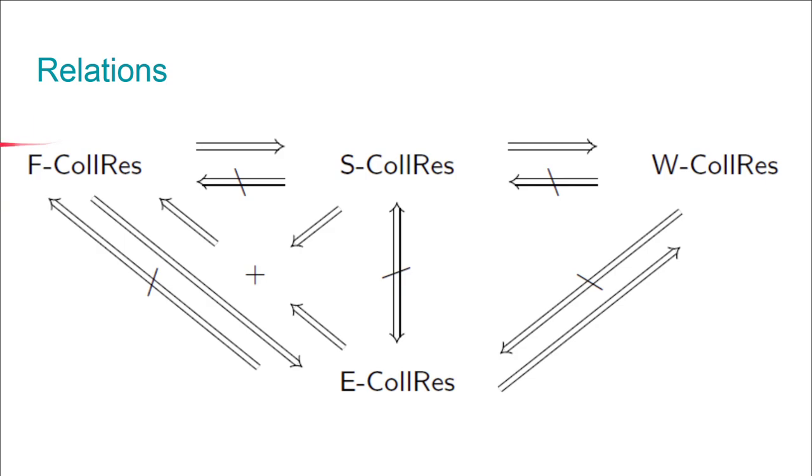For the collision resistance notions, they are related as follows. Weak collision resistance is implied by any other definition, while full collision resistance implies all other properties. Standard collision resistance and enhanced collision resistance are not comparable, while standard plus enhanced implies full collision resistance. In other words, this picture diagram is complete.